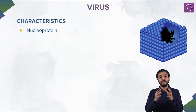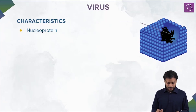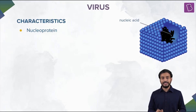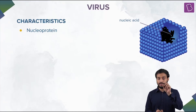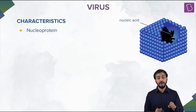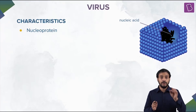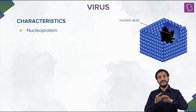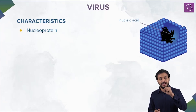Nucleoprotein — what does this mean? This means they have nucleic acids and proteins, just nucleic acids and proteins. The nucleic acids can be DNA or RNA. Please take note: the nucleic acids can be DNA or RNA, and never ever both. Both DNA and RNA can never together be the genome or the genetic material of these viruses.